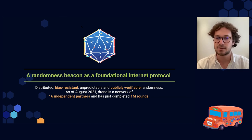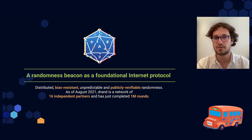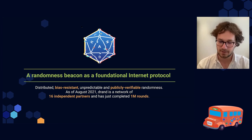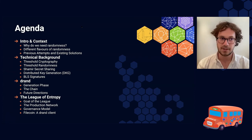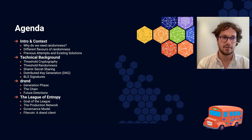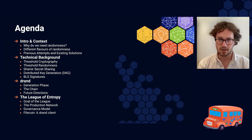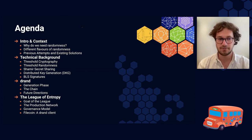It's a distributed, bias-resistant, unpredictable, and publicly verifiable randomness. The agenda for today: I'm going to talk about the context, why do we need good randomness, different flavors. Then we're going to get right into the technical background, especially about threshold cryptography.